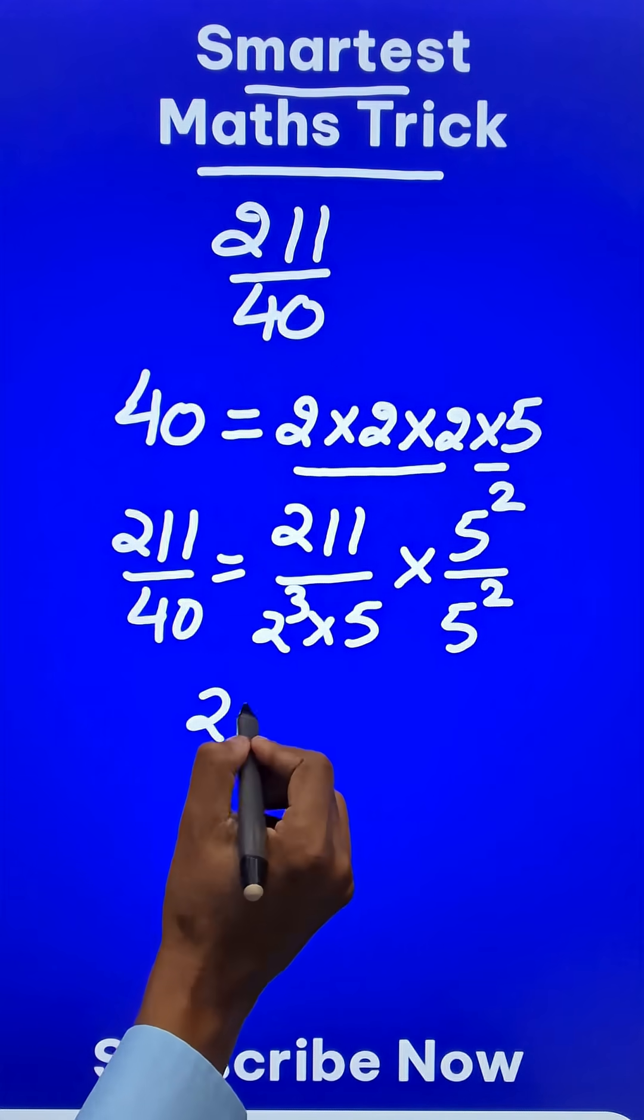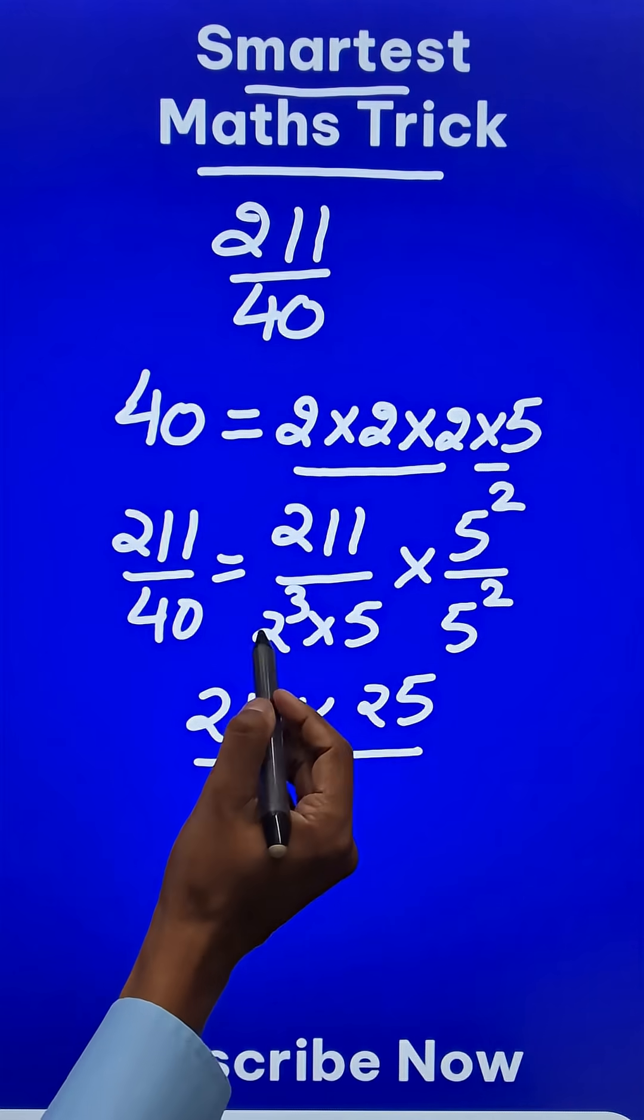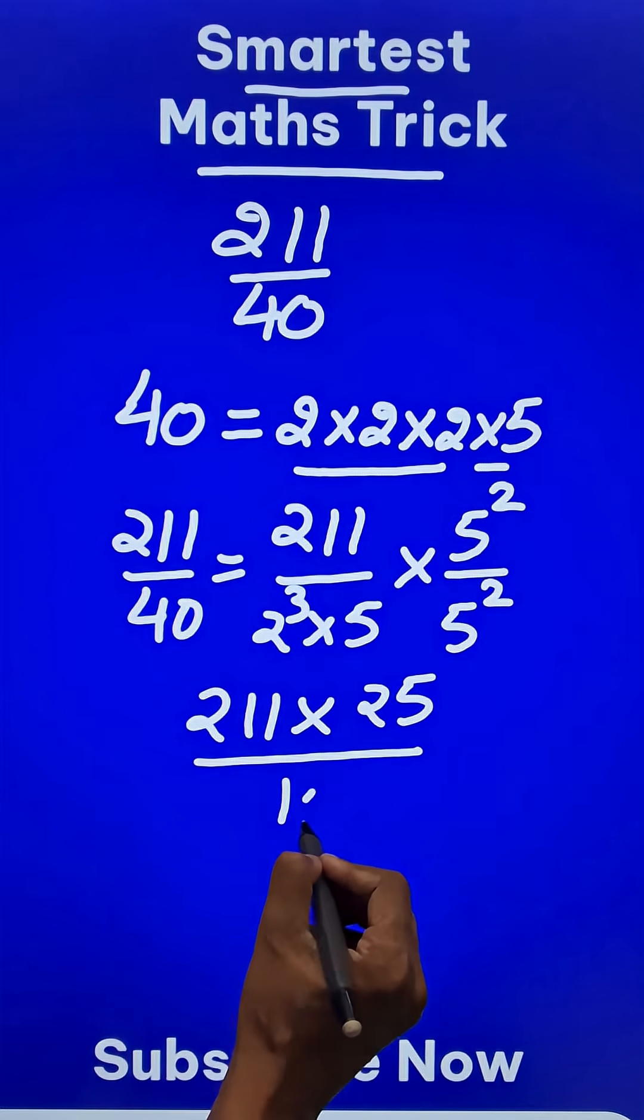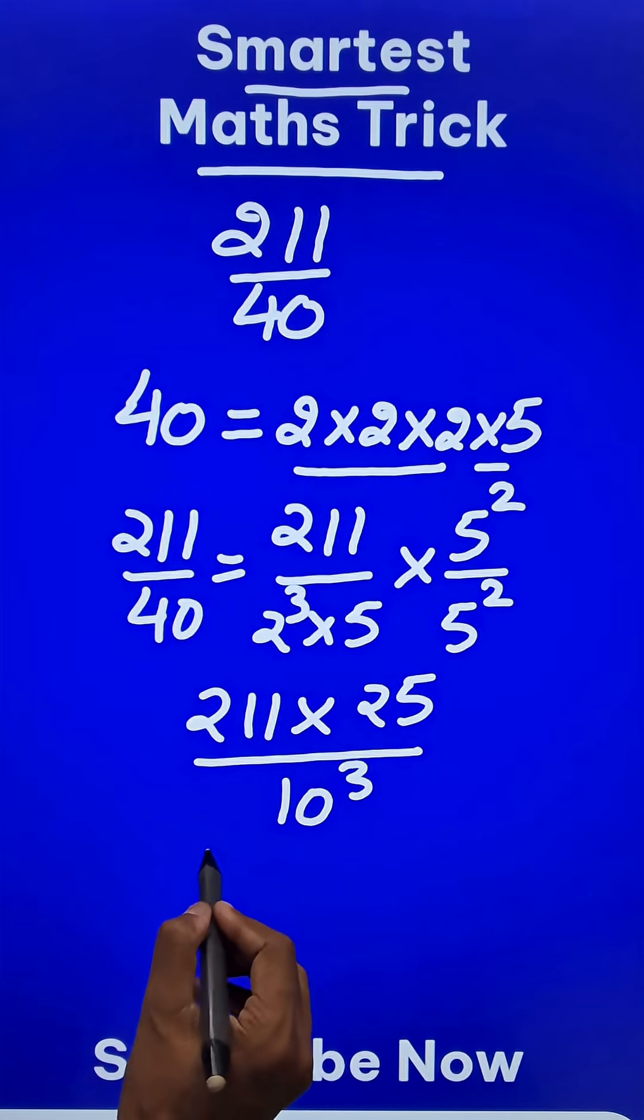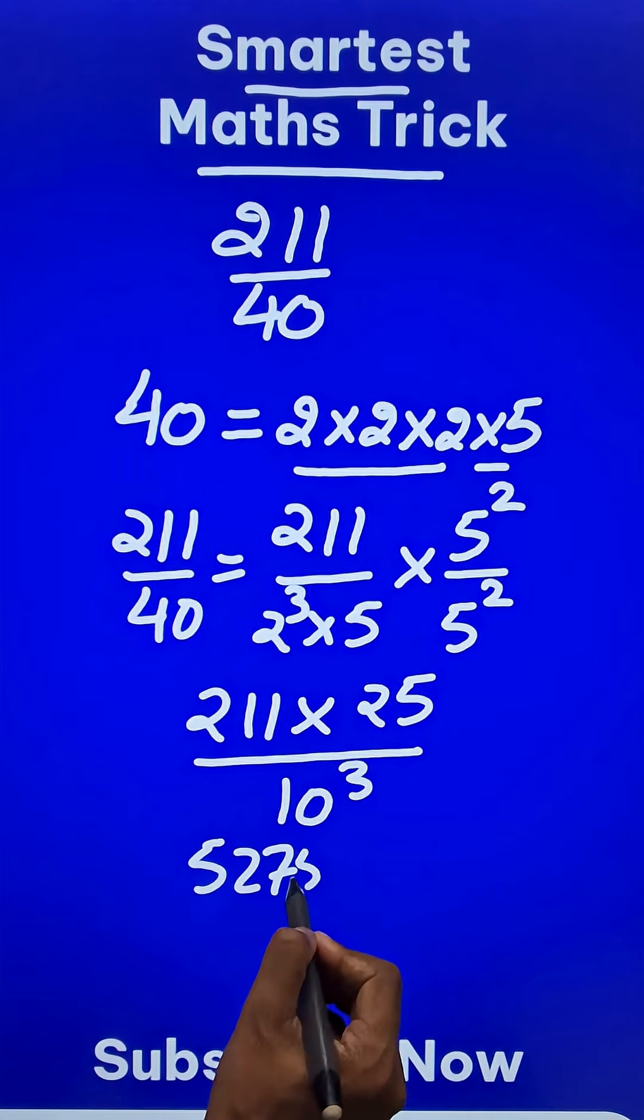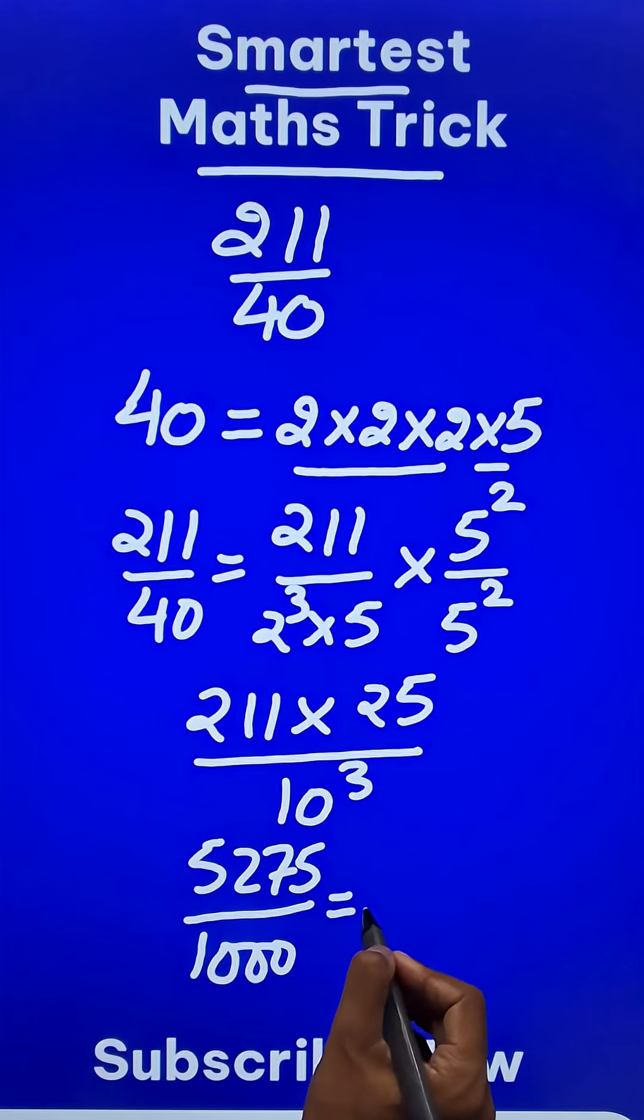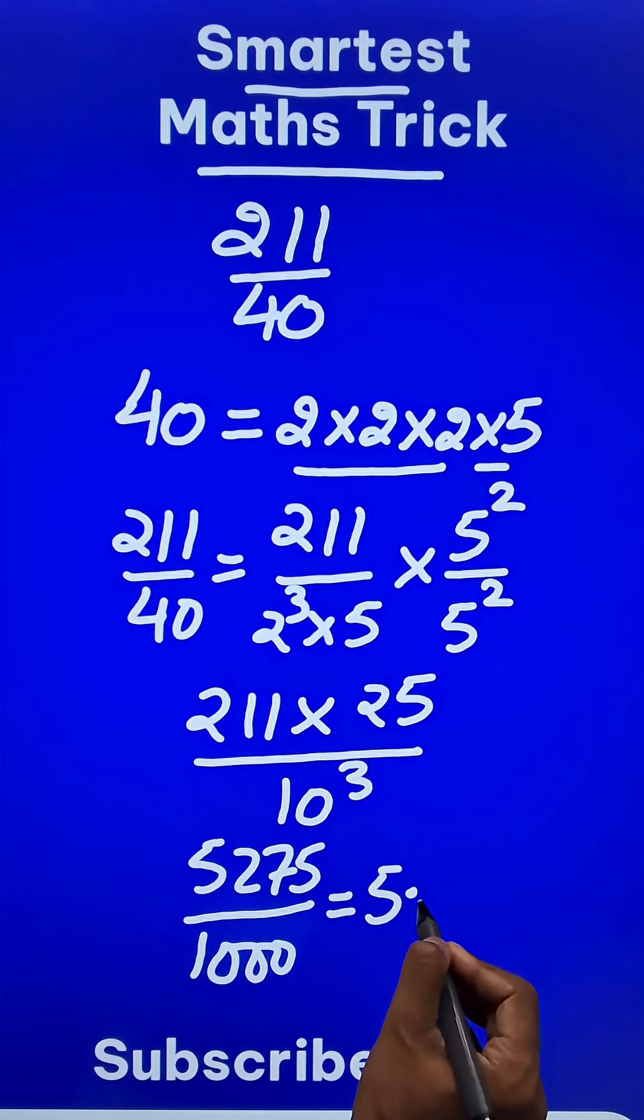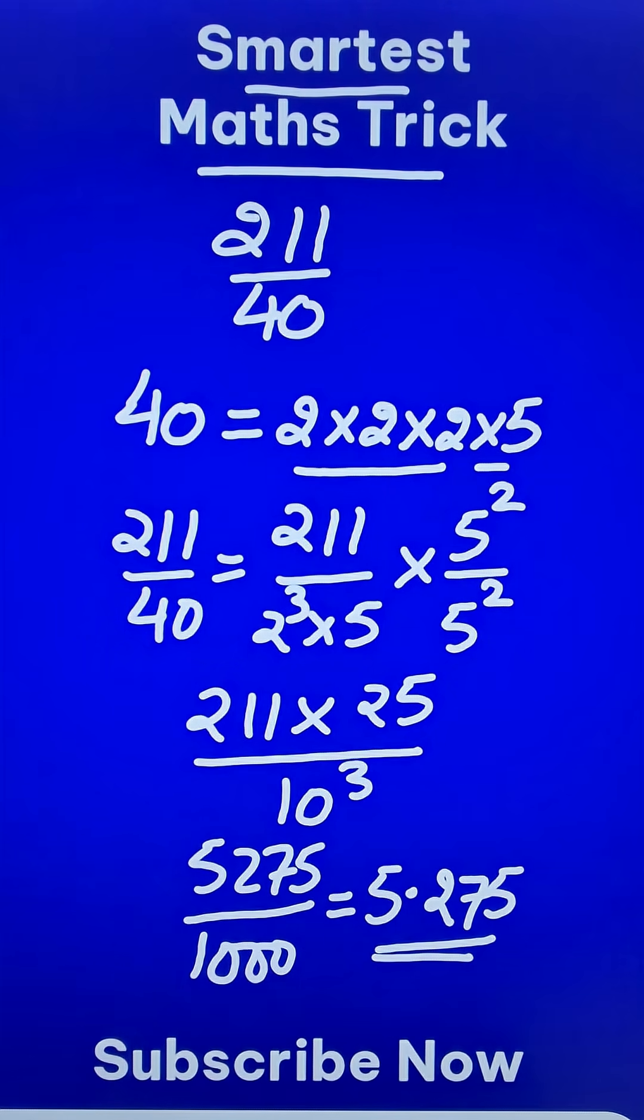So what does that give me? 5 square is 25, and in the denominator you will have 2 cube and 5 cube, which is 10 cube. When you multiply 211 by 25, you get 5275, and when you divide by 10 cube, which is 1000, you get the decimal representation: 5.275. You can check this using the traditional approach.